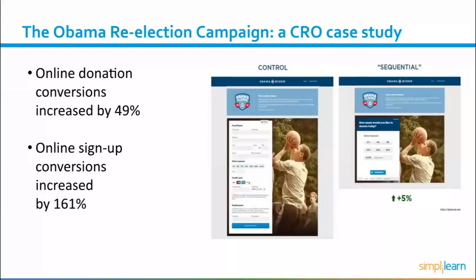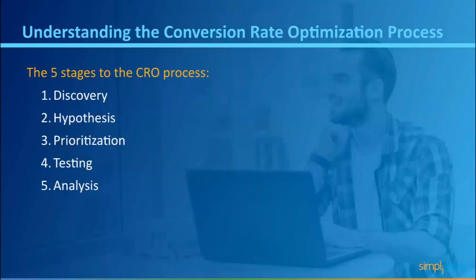So what can you learn from this campaign's conversion optimization strategy? How can you too improve your website's conversion rate time after time? If there's one thing that defines conversion rate optimization, it's testing — lots and lots of testing. Just like Barack Obama's re-election campaign, the secret to their success was constantly trying out different variations of their landing pages, all designed to help them reach their goals faster. CRO testing is closely interlinked with most CRO strategies.